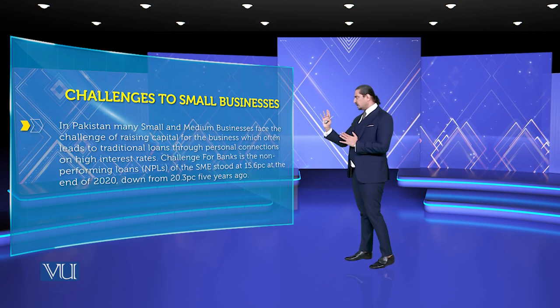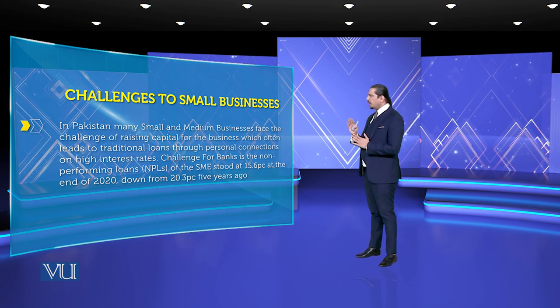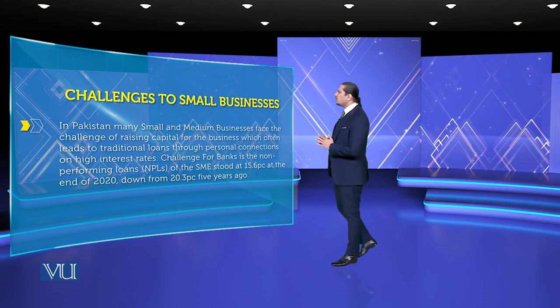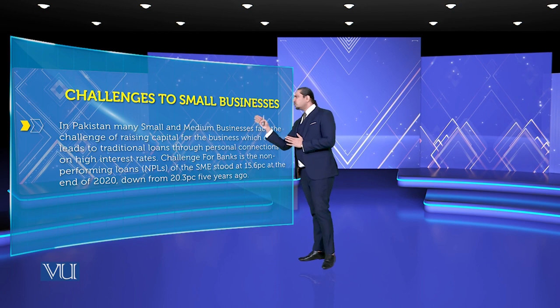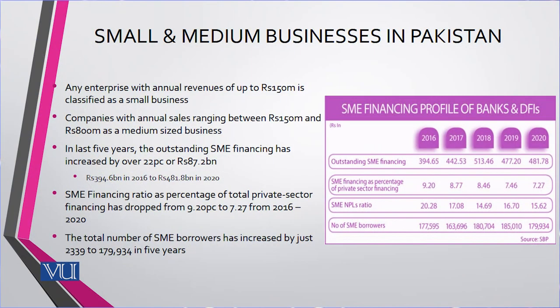In Pakistan, small and medium enterprises face the challenge of high interest rates, and for banks the challenge is non-performing loans (NPLs). SME NPLs stood at 15.6% at the end of 2020, down from 20.3% five years prior. A small business is considered as one with up to 150 million in annual sales; companies between 150 million and 800 million are considered medium-sized businesses.